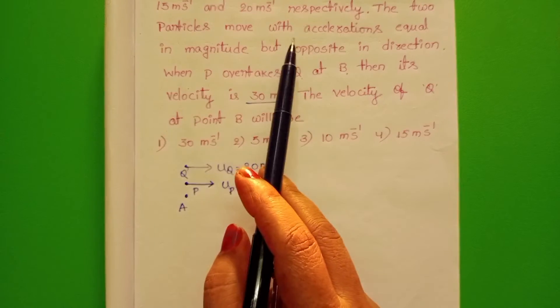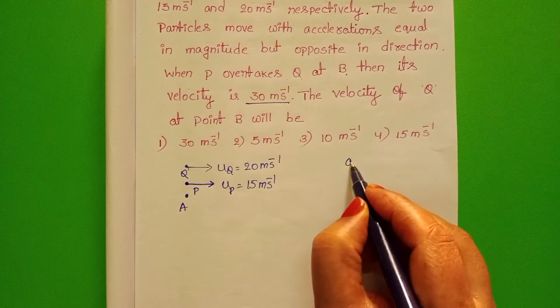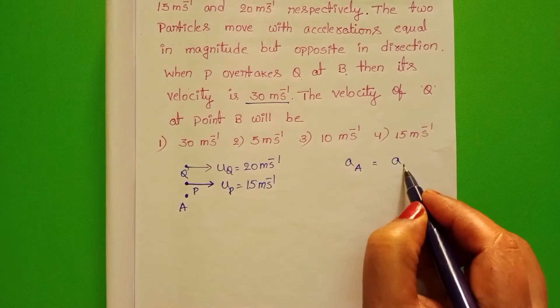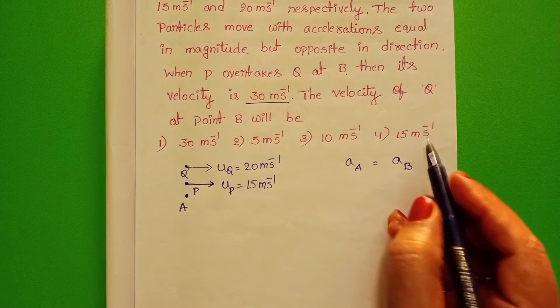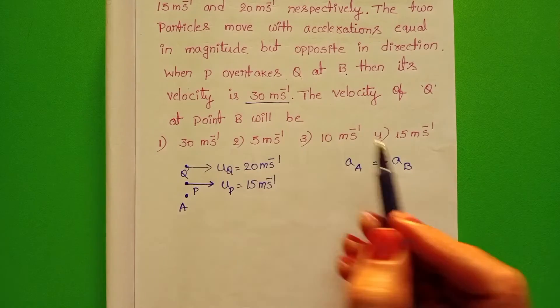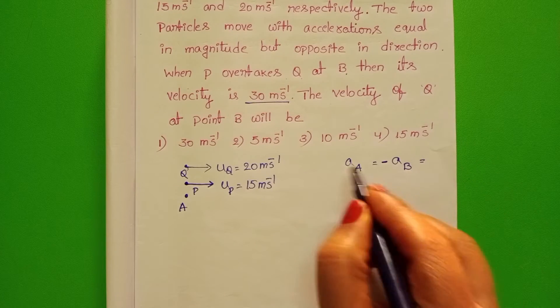The two particles move with accelerations equal in magnitude. Acceleration of particle A is equal to B but opposite in directions. So take negative sign here. Acceleration of A and acceleration of B.